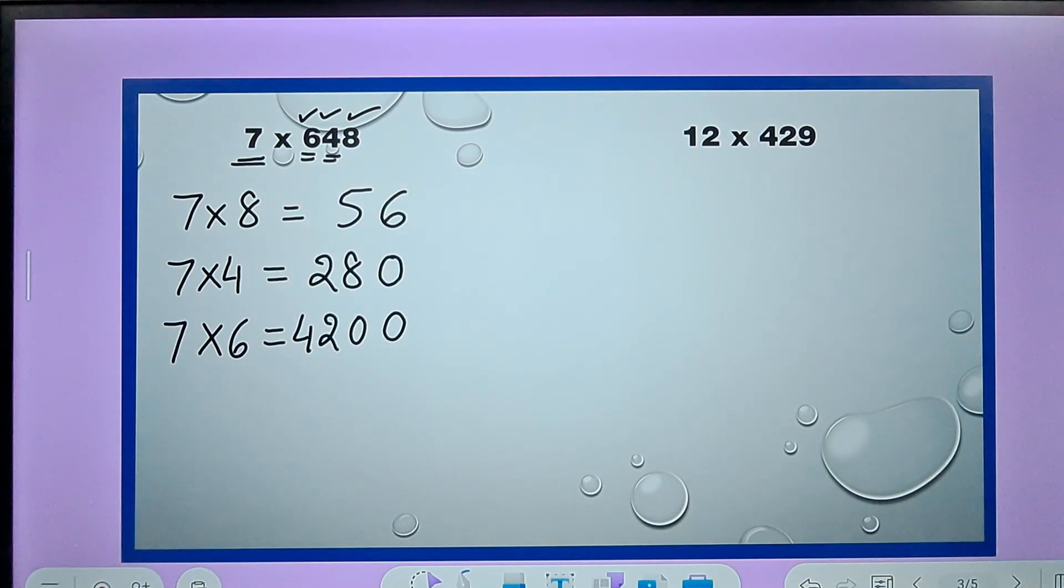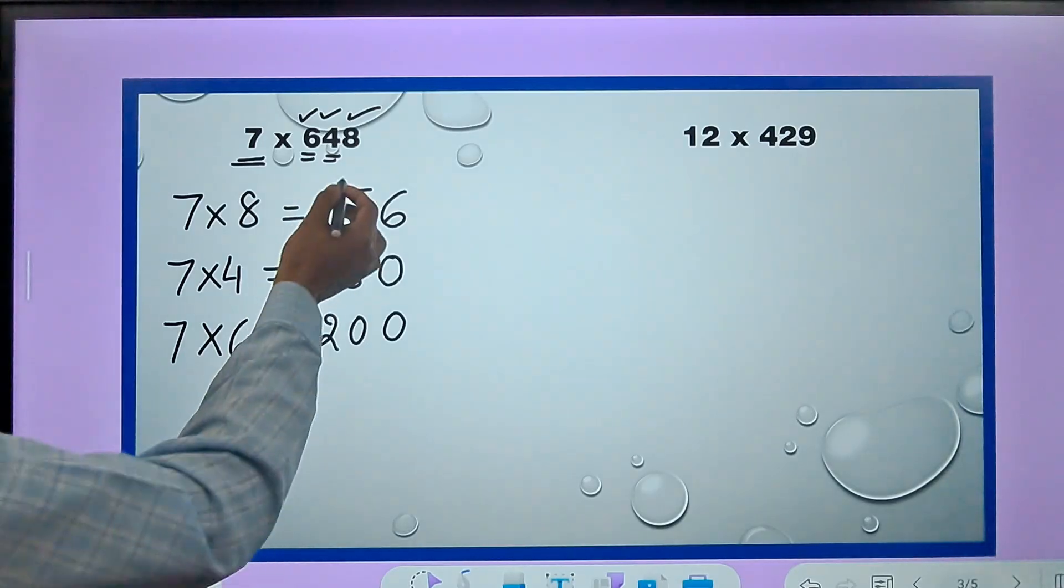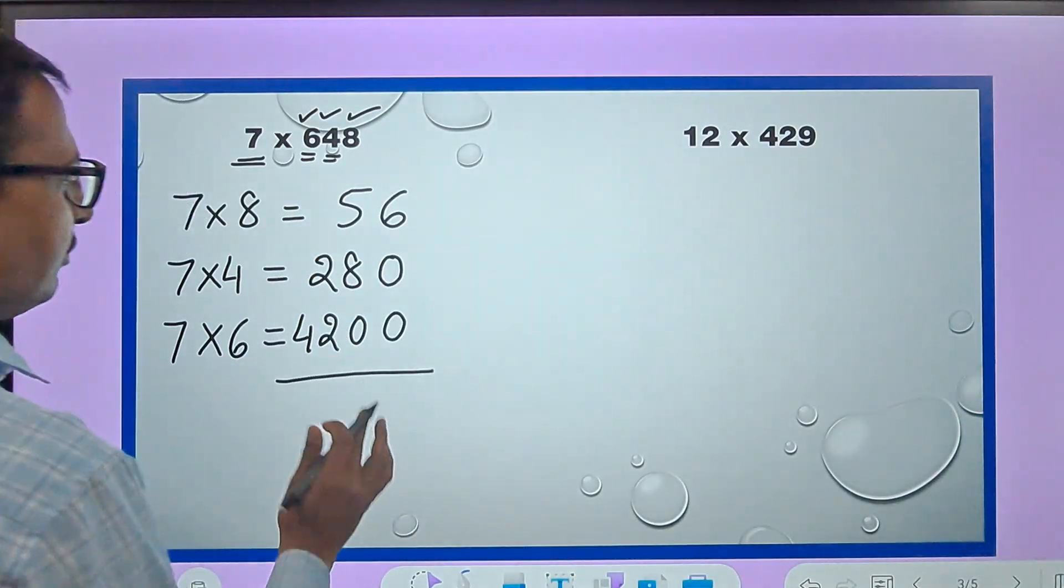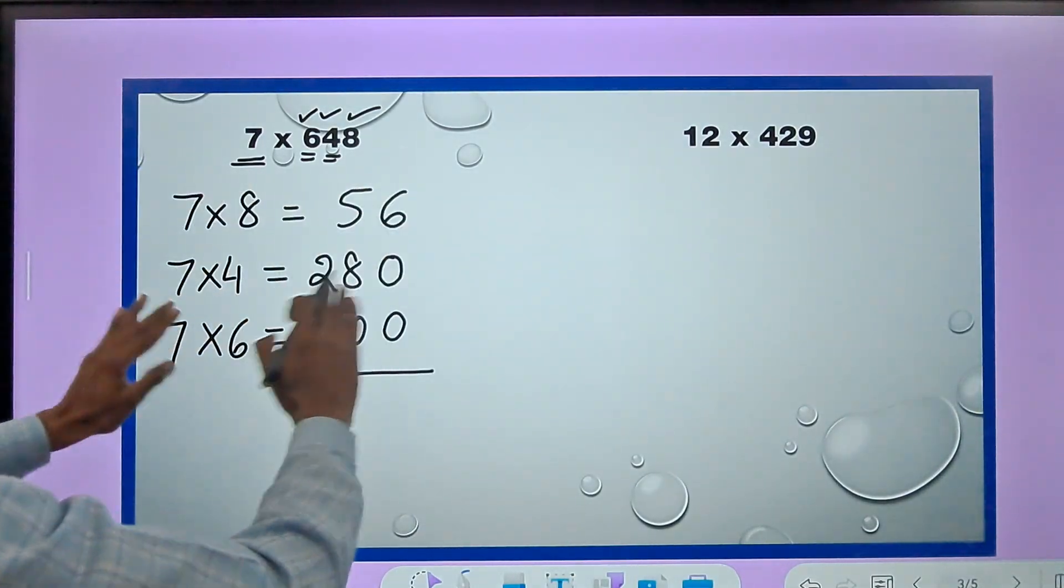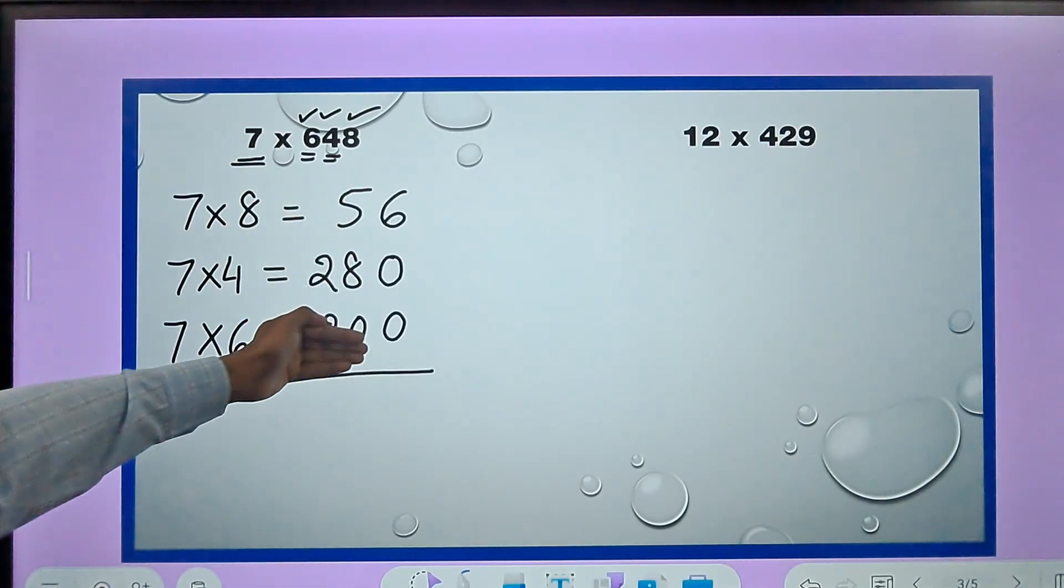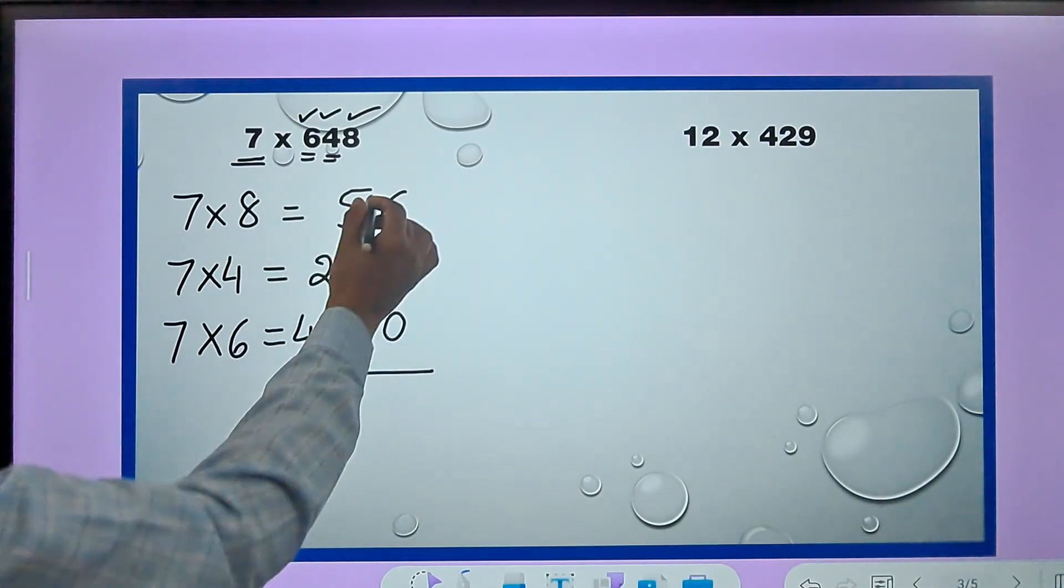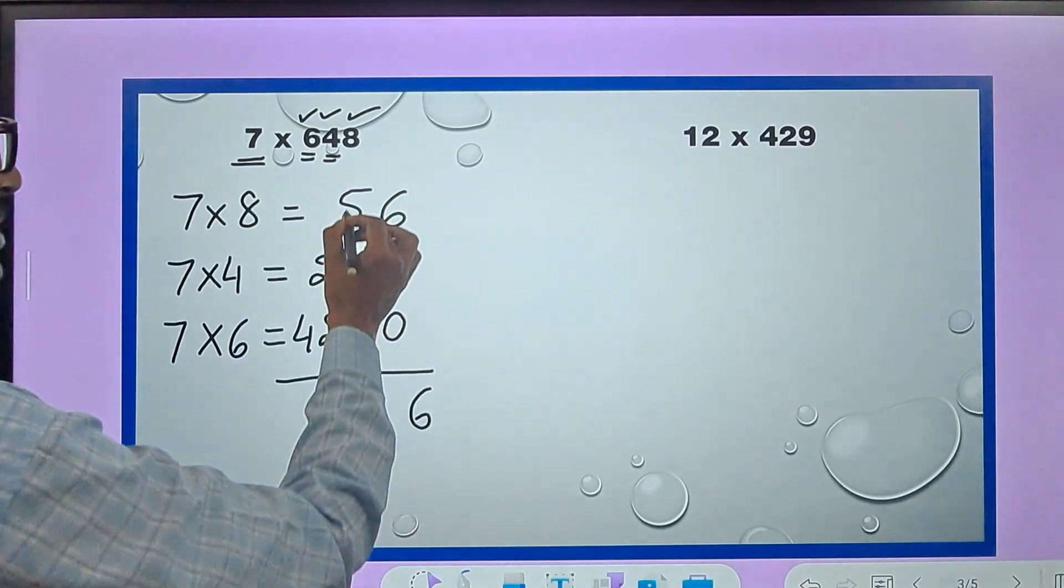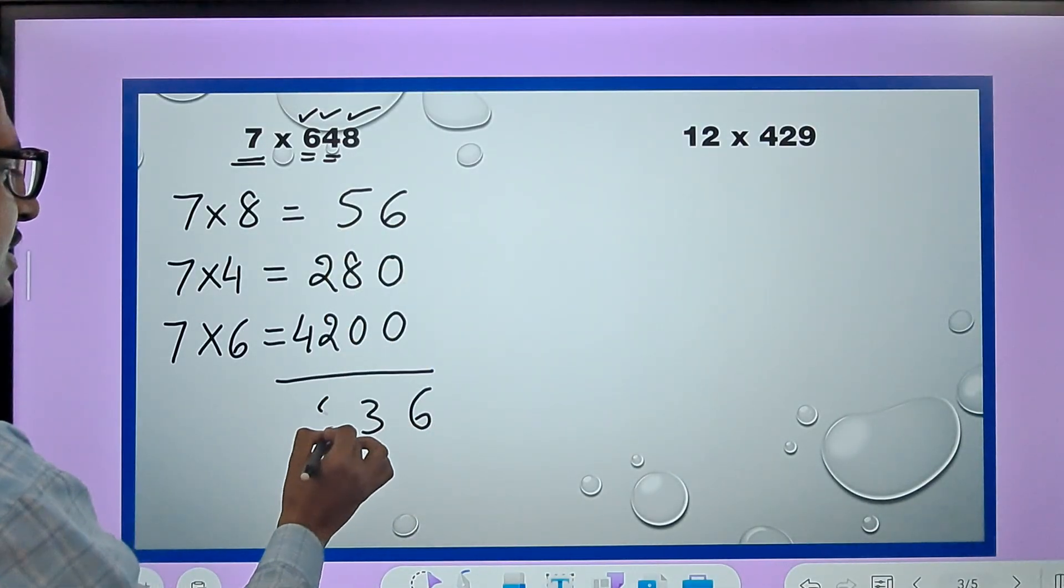Now this is what we need to understand when we are using the partial product method. These three numbers can be written without actually having to write these three products - you can write them directly in the rough column and then simple vertical addition. 6, 3, 1 carry, so this is 5 and this is 4 will get you the answer for the question.